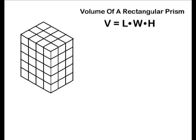The shown geometric solid is a rectangular prism. To find the volume of any rectangular prism, we simply multiply the length times the width times the height.